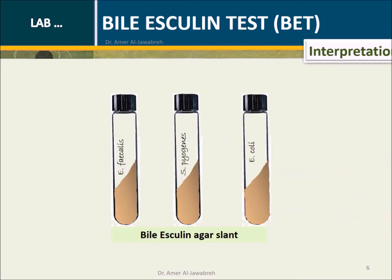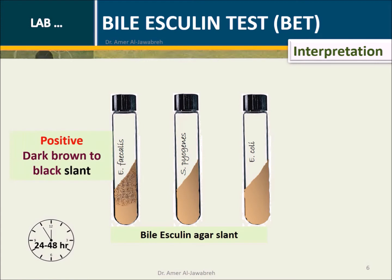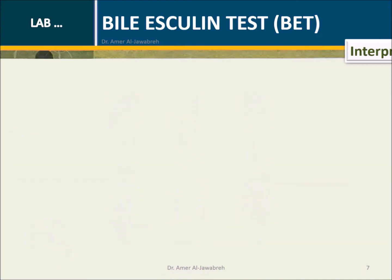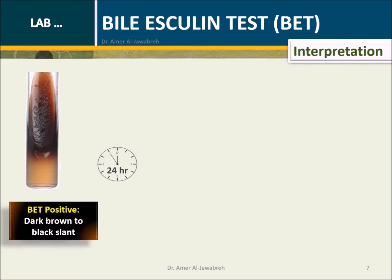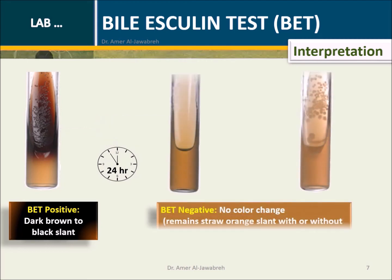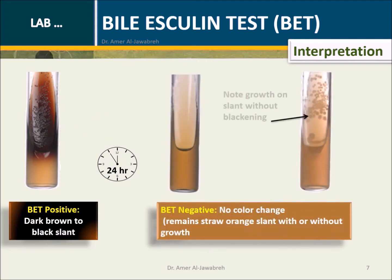Interpretation: After 24 to 48 hours, the surface of the slant will become dark brown to black, indicating positive results. No color change indicates negative results. Growth on the slant without blackening is also considered a negative result.